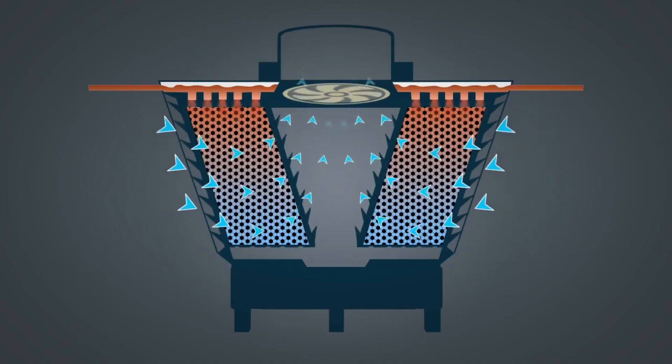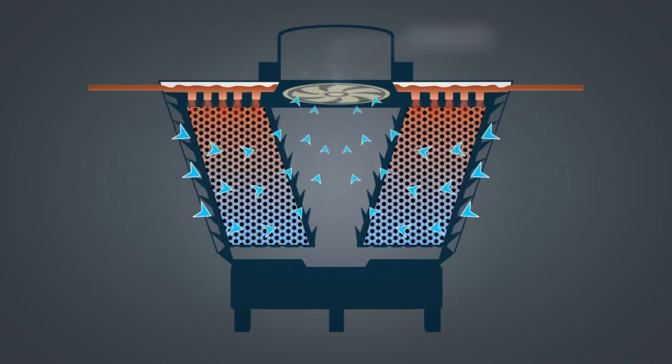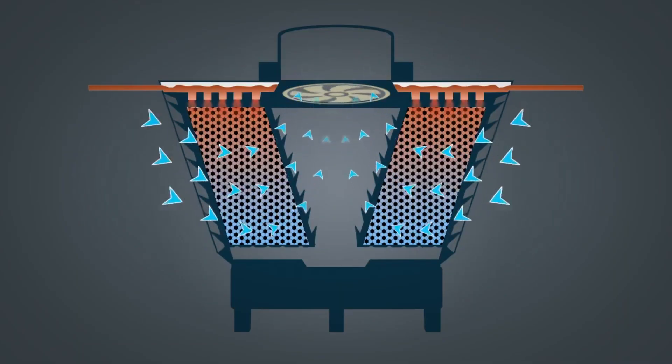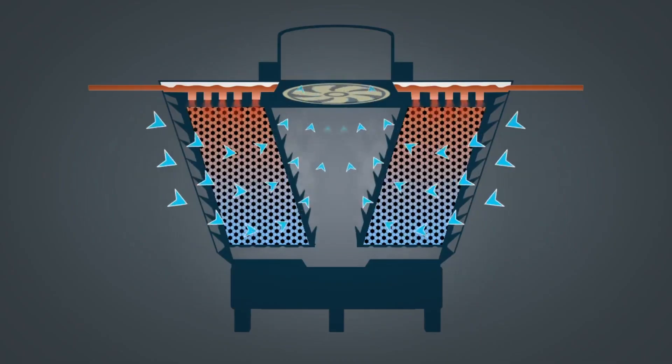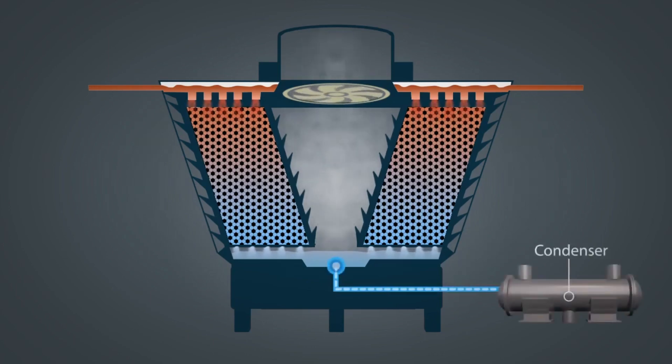The exhaust fan installed at the top draws air across the water droplets and cooling by exchange of latent heat results in the form of evaporation of a small amount of water. After passing through the fill media, the water gets collected in the basin. From the basin, it is pumped back to the chiller condenser section by the condenser water pump.